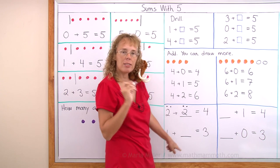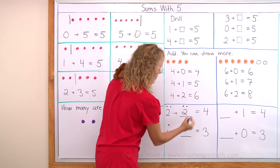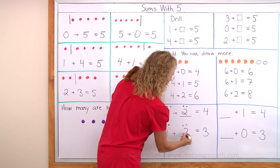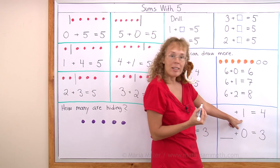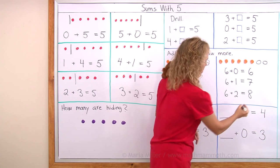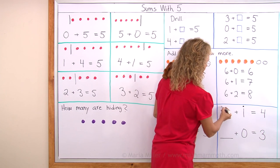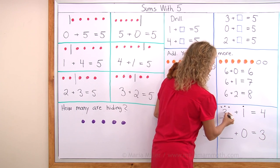One plus how many more makes three? One here. Two here makes three. How many and one makes four? One here. Three here, right?